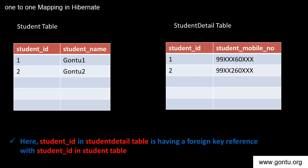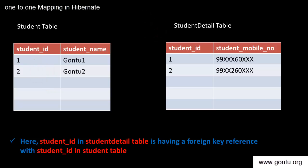For example, say you have two tables: Student and StudentDetail. Every student record would have its detail captured in the StudentDetail table. The number of records in the Student table is always equal to those in the StudentDetail table. StudentID is a common column in both tables, and StudentID in StudentDetail is linked to StudentID in Student, holding only values that exist in the Student table. This is a good example of one-to-one mapping.